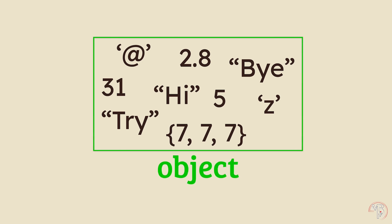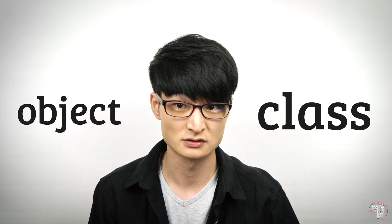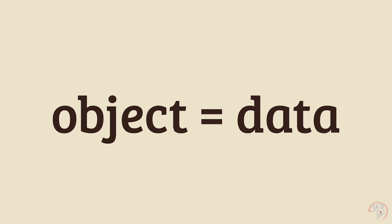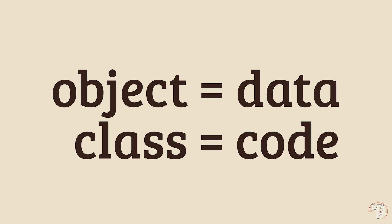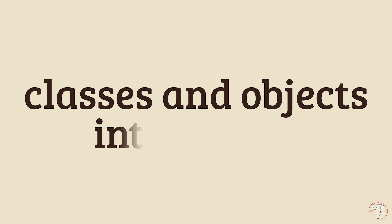So what determines the contents of an object? How does the computer know what kind of data an object must contain? Well, in addition to objects, there is another important concept in OOP: class. Class is what defines the contents of an object. So classes are used to create objects, pretty much like a blueprint is used to build a house. If objects are data, then what exactly are classes? A class is basically code that you write. In pure OOP languages such as Java or C-sharp, basically no code can be written outside of a class. So we write classes and then use those classes to create objects.